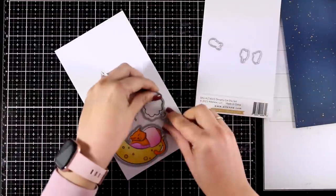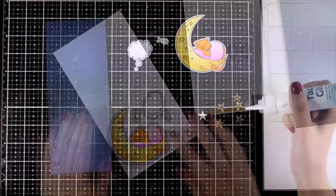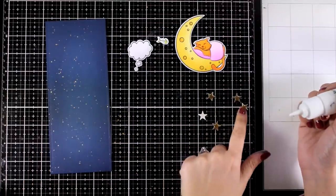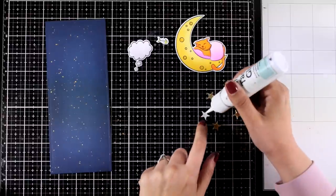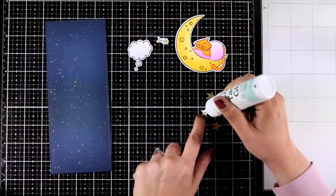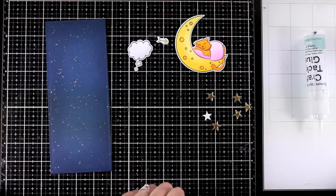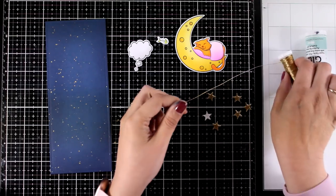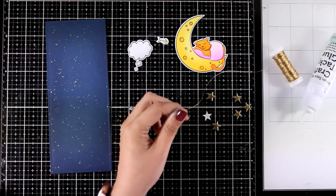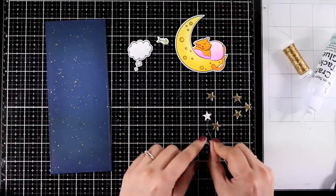After I had everything colored I used the matching dies to cut them out and I wanted an interactive element on this card with dangling stars coming out from the bottom of the moon. That's why I used a small star die that I had in my stash and I die cut 6 stars out of gold foiled cardstock. I am going to stick two of them back to back and in between I am going to sandwich a piece of this thread. This is again an Altenew golden thread.